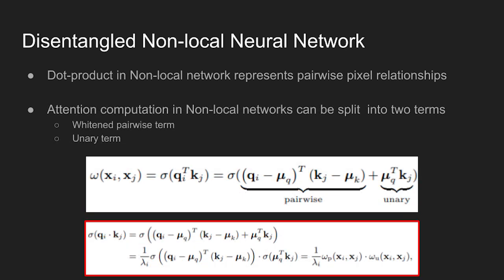The equation above can be rewritten to the equation at the bottom. From this equation, two changes are made by the authors to ensure disentanglement of pairwise and unary terms.